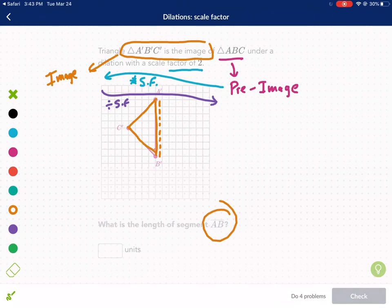And so if it underwent a scale factor of 2, that means we divide by 2. So the pre-image should have a length of 8 divided by 2, which is 4.